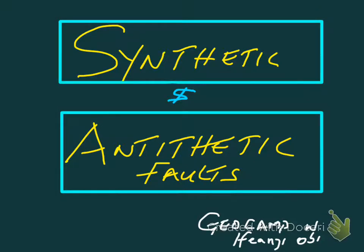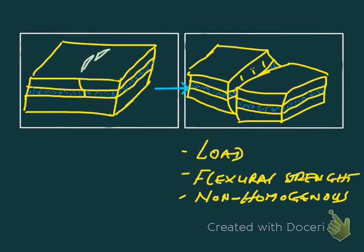Hello friends, welcome to our Geocam series once again. I'll be talking on synthetic and antithetic faults. If we consider a simple passive margin setting, we have an unfaulted block A and a faulted version of it, B.